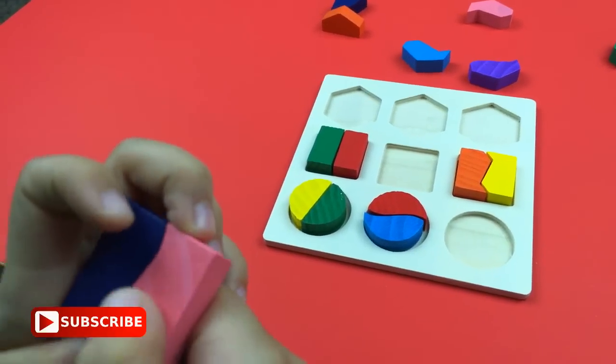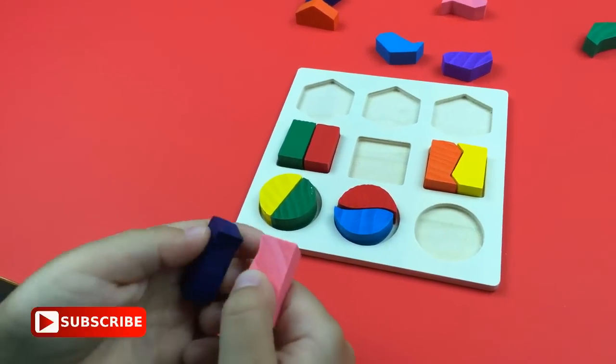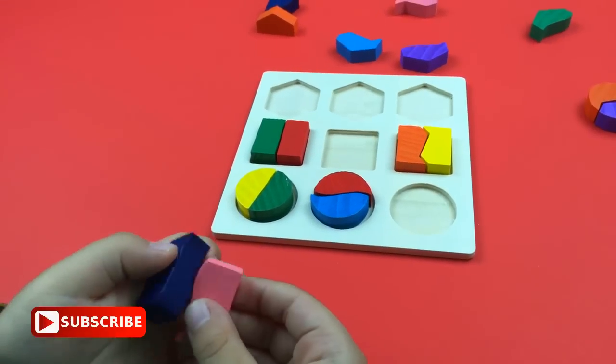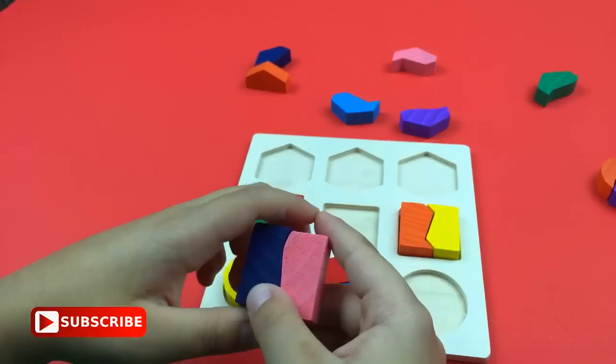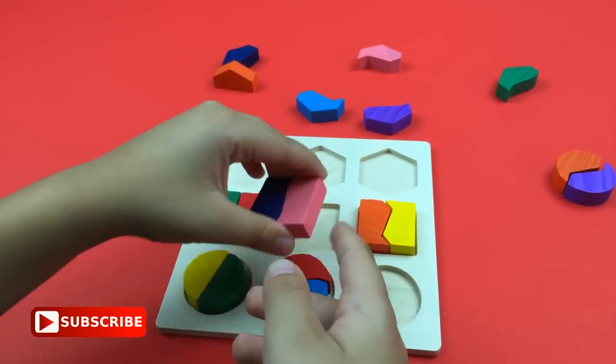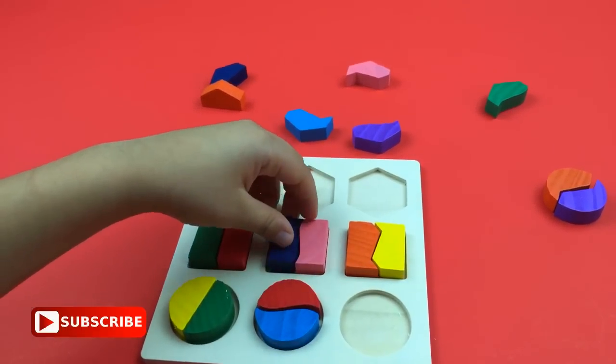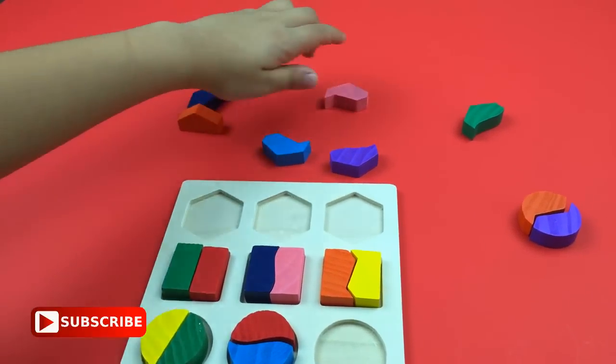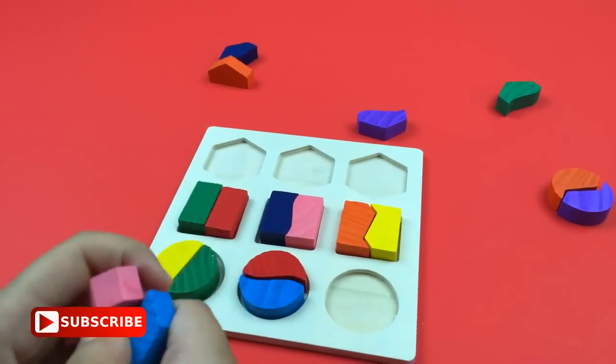You see this? One's pink, one's blue. It has a curvy line to make a square. I'm getting another shape.